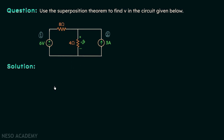According to the superposition theorem, the voltage across an element is the algebraic sum of the voltages due to each independent source acting alone. We have two independent sources and we need to find the voltage across this resistor due to each source one by one. Then finally we will add the obtained voltages to get the net voltage V. First, we will consider the voltage across the 4 ohm resistor due to the 6 volt source, which means we need to turn off the 3 ampere source by open circuiting it.